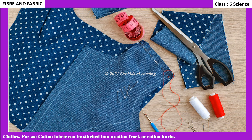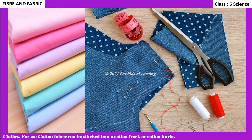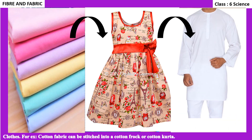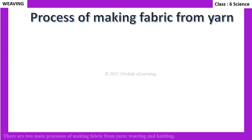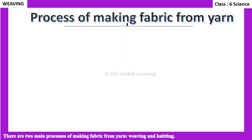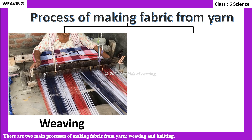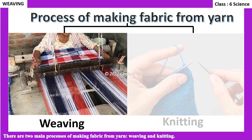For example, cotton fabric can be stitched into a cotton frock or cotton kurta. There are two main processes of making fabric from yarn: weaving and knitting.